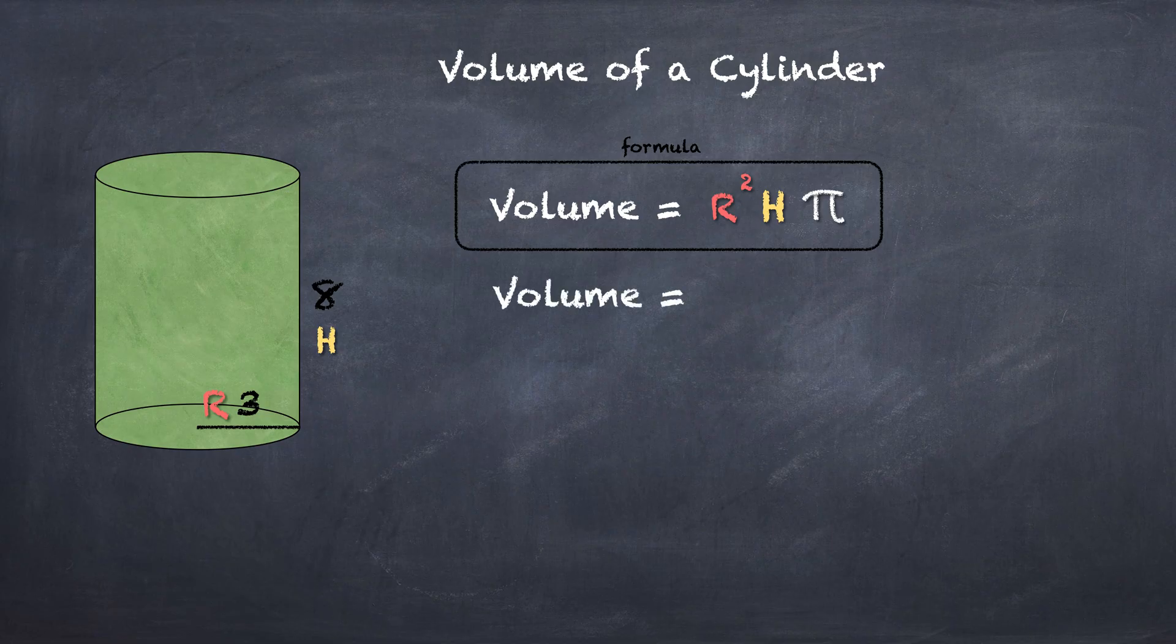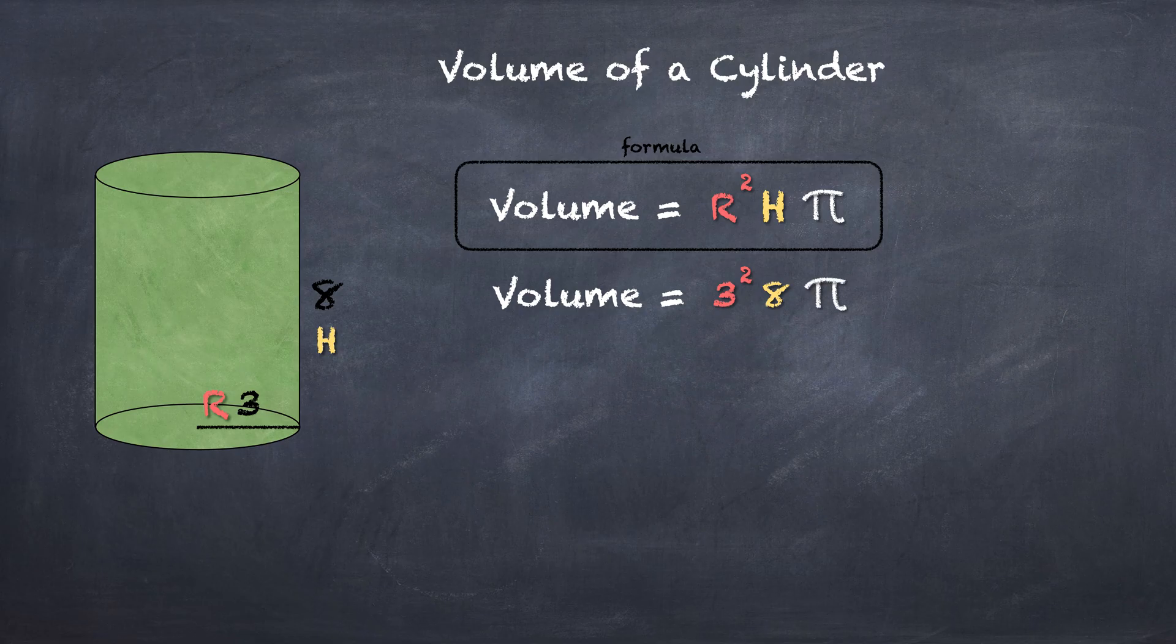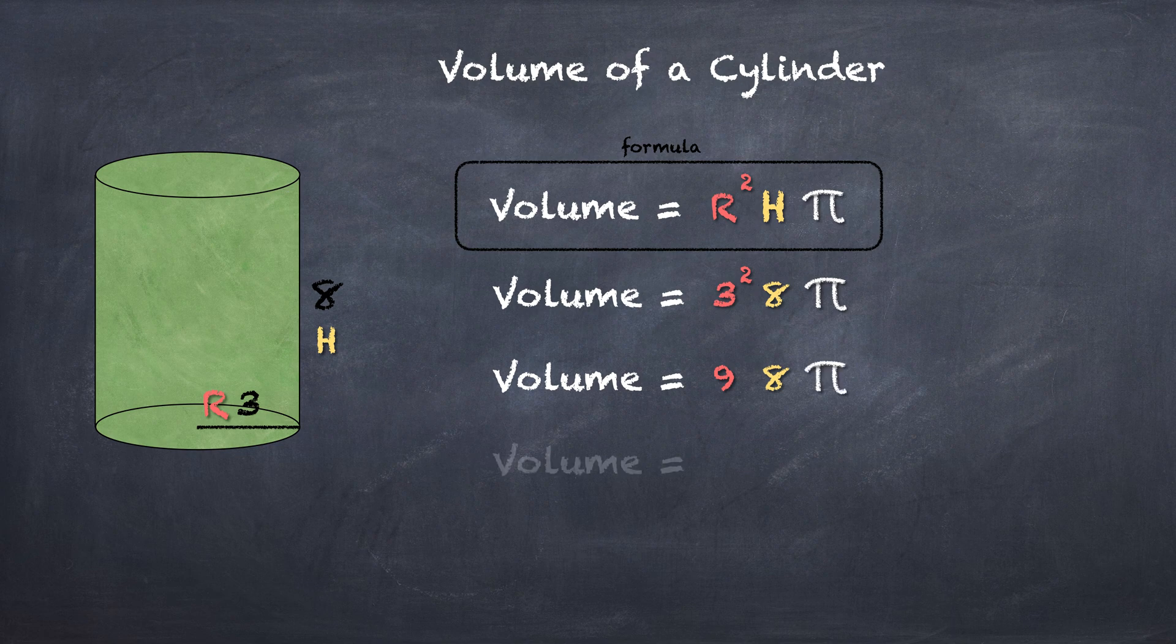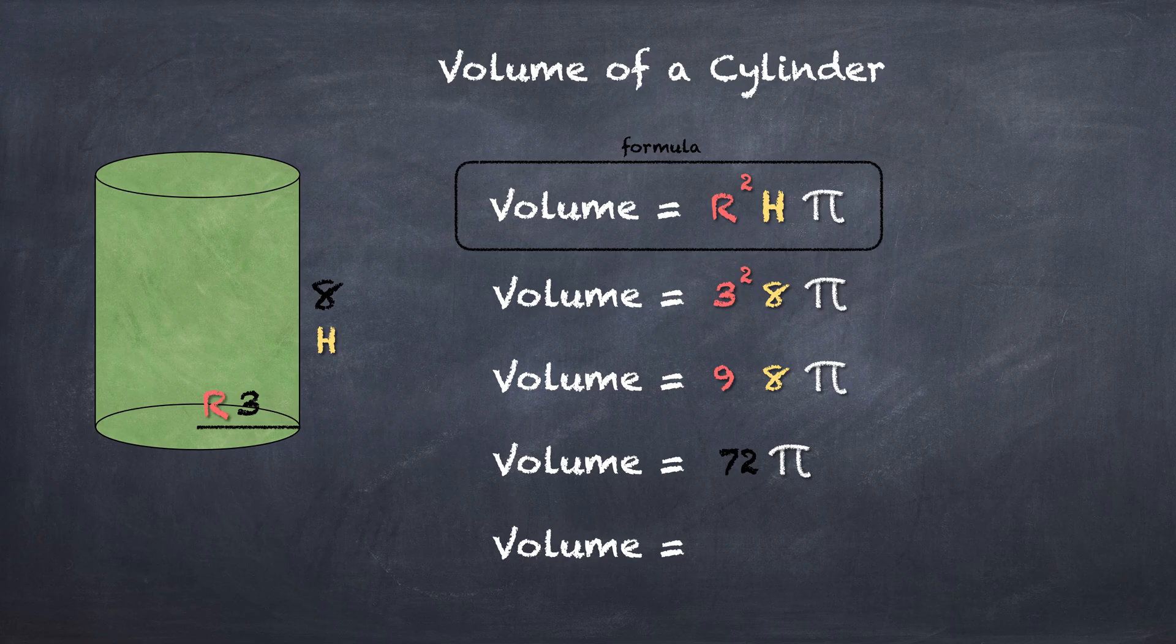So the volume is going to be 3² times 8 times π. Now you're just going to go through the order of operations, left to right. 3² is 9 times 8 times π. 9 times 8 is 72 times π. Whether the question wants it in terms of π or a specific number, 72 times π...